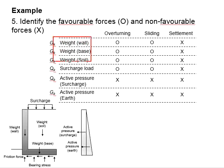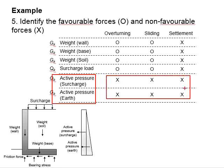The weight and surcharge is found to be favorable for overturning and sliding analysis, but it is non-favorable for the settlement. As for the active pressure due to the surcharge and the earth, it is non-favorable for all the cases.